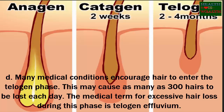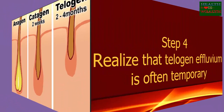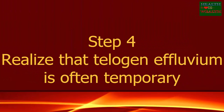This may cause as many as 300 hairs to be lost each day. The medical term for excessive hair loss during this phase is telogen effluvium. Step four: realize that telogen effluvium is often temporary.